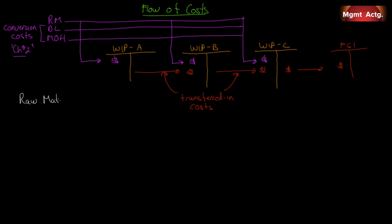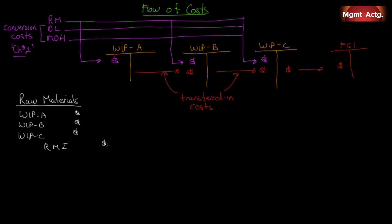Let's look at the journal entries. Since we have multiple work in process accounts, raw materials can go into any of them — work in process for department A, B, or C can all increase, and all come out of raw materials inventory. That's the same as we did in job costing. For labor, it's the same thing — labor can enter in any of the departments.